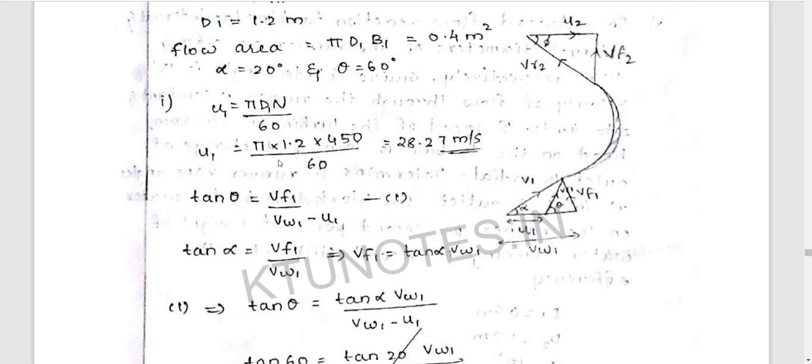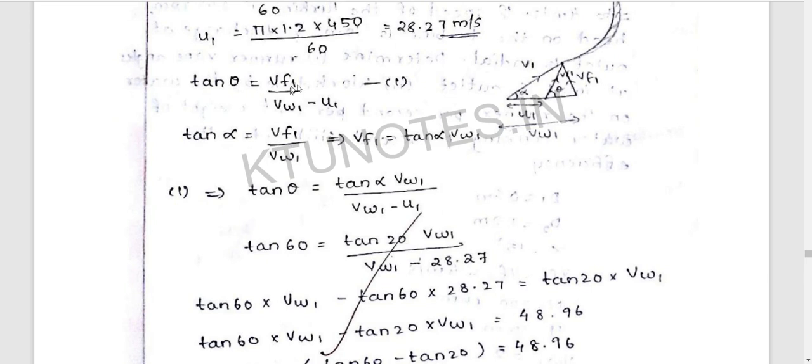Calculate U1 using Pi D1 N by 60. Using the velocity triangle: tan alpha equals Vf1 by Vw1, and tan theta equals Vf1 by (Vw1 minus U1). Substituting tan alpha gives Vw1, and we can solve for Vf1 from the velocity triangle using trigonometry.